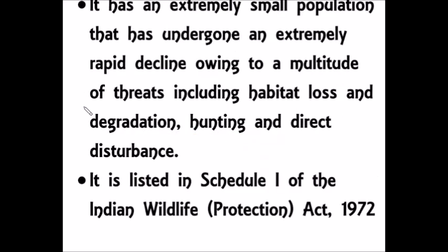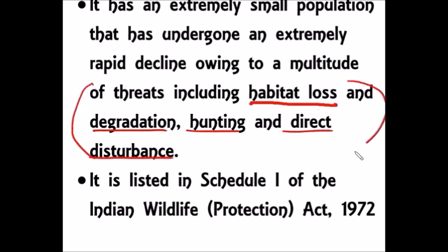While writing an answer in the Mains examination for any species, the reasons for the declining population are the same — habitat loss, habitat degradation, hunting, and man-animal conflict. These are all common points for any species, so you can use this common answer even if you don't know the exact answer for a particular question.